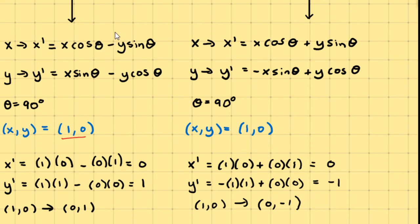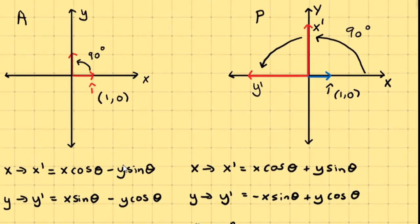And if we do that, we find that the point 1, 0 transforms to the point 0, 1. So 1, 0 moves to 0, 1. If we go back up and look at our diagram, you'll see that that is indeed the case.